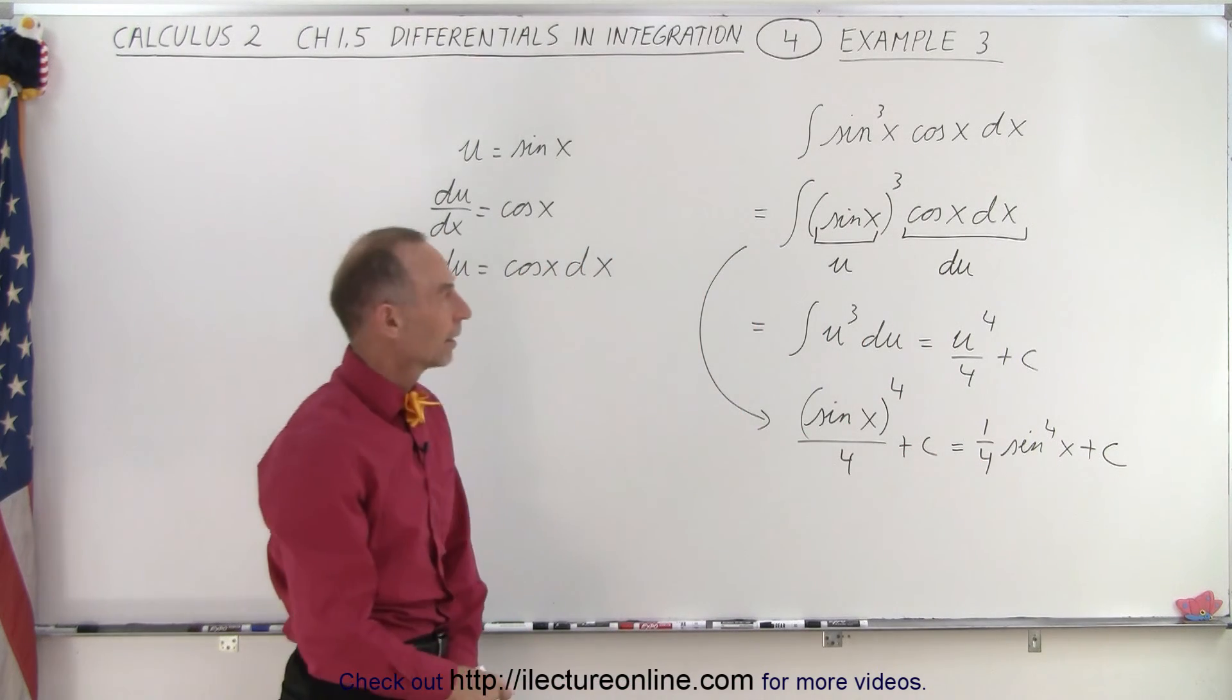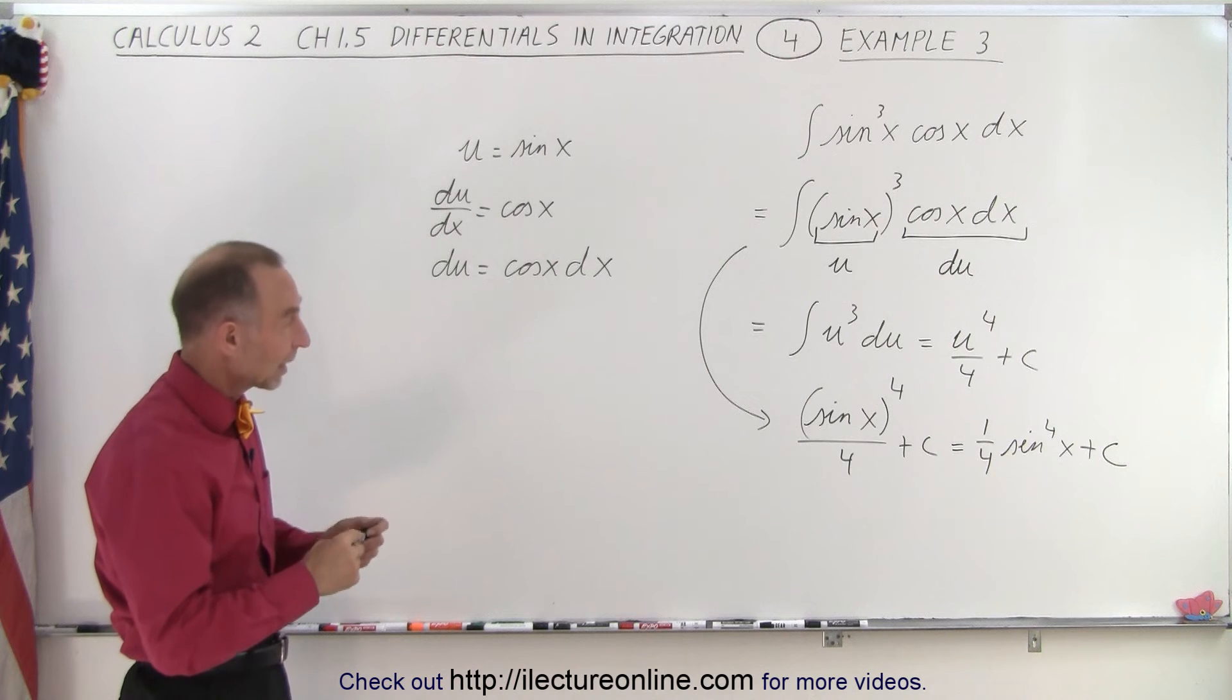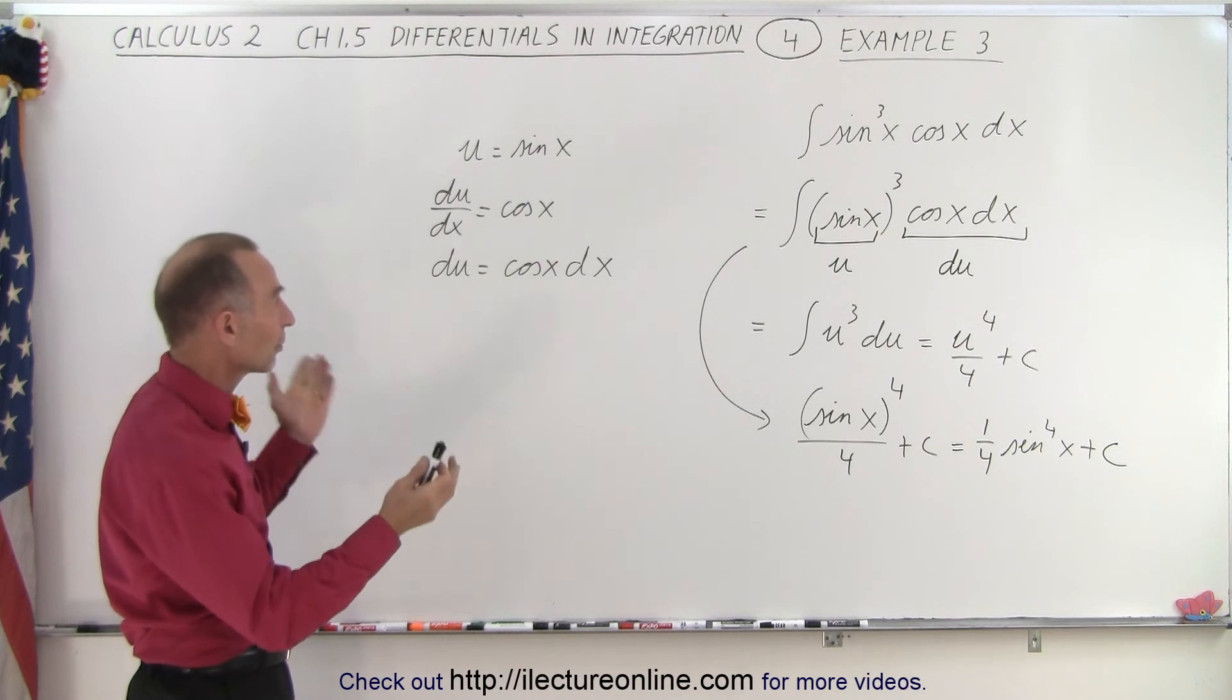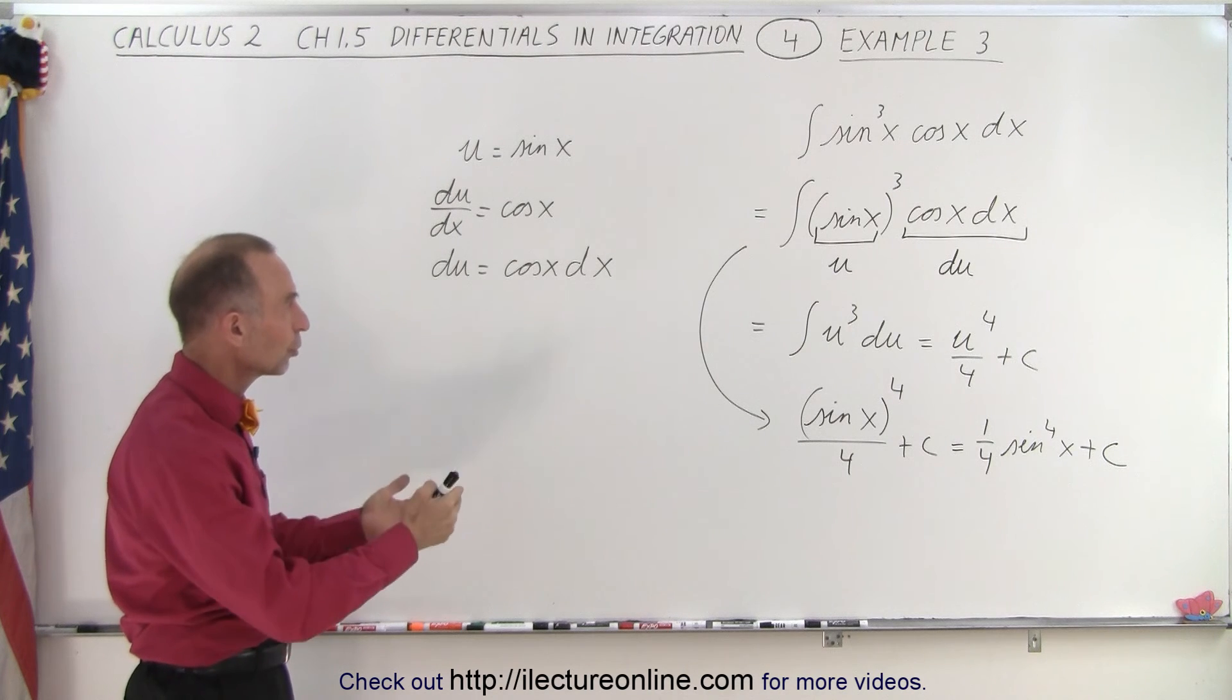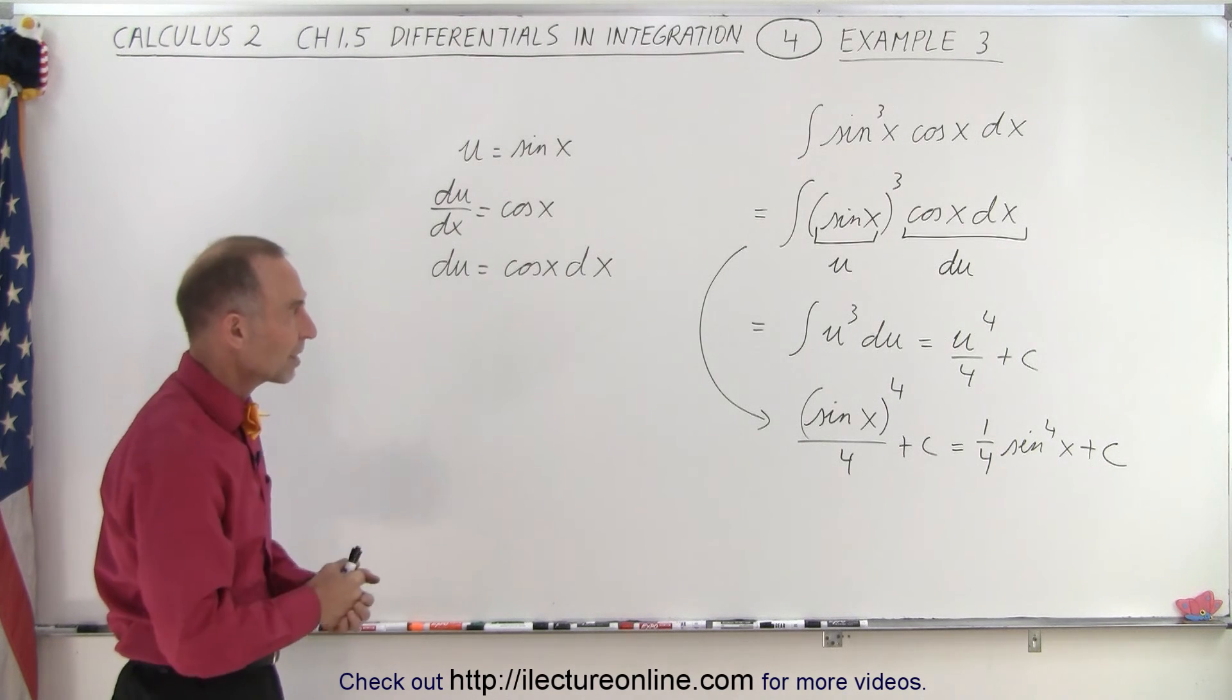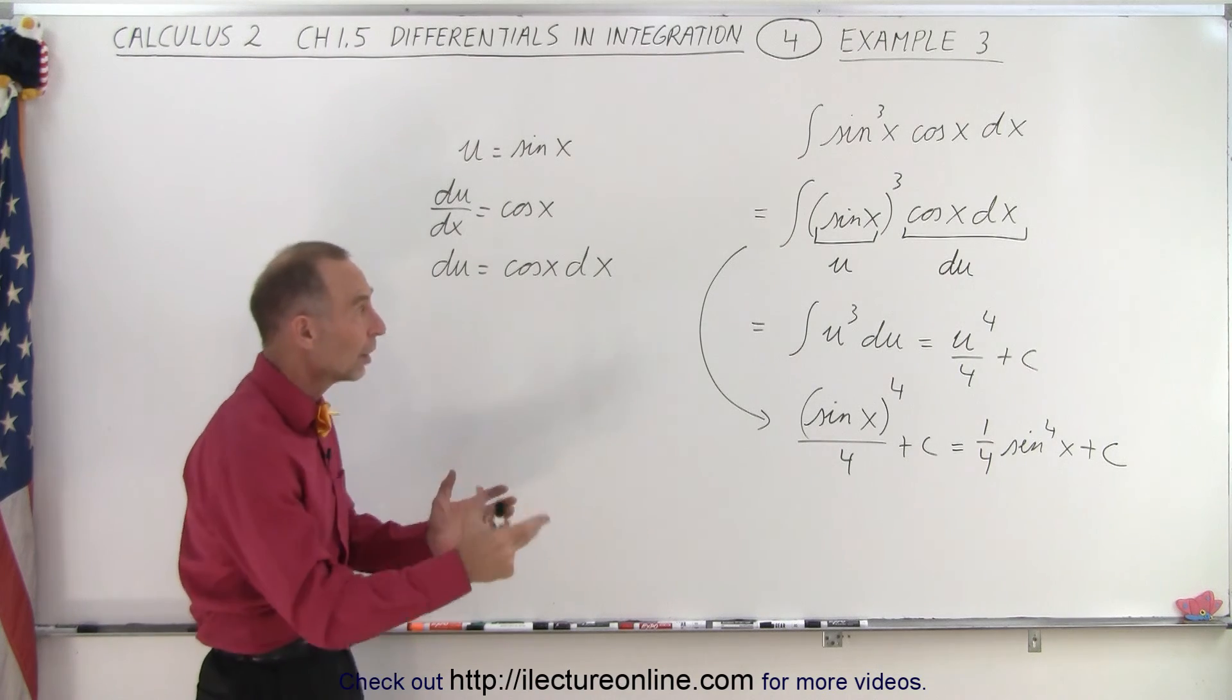And it's as simple as that. In this case we didn't have to make any adjustments. We looked at it and said, well we have the proper differential du. So we have u cubed du, or the sine of x cubed times cosine of x dx, which is the differential that we need to integrate it.